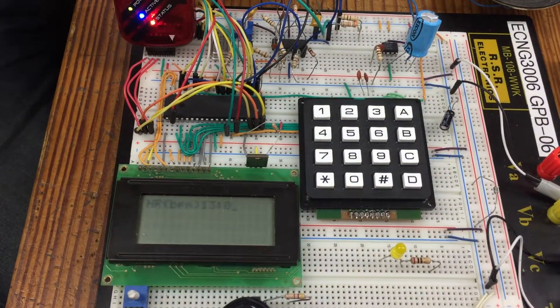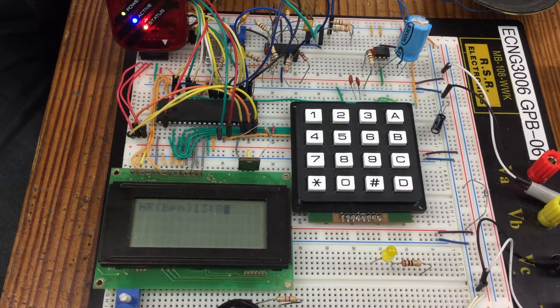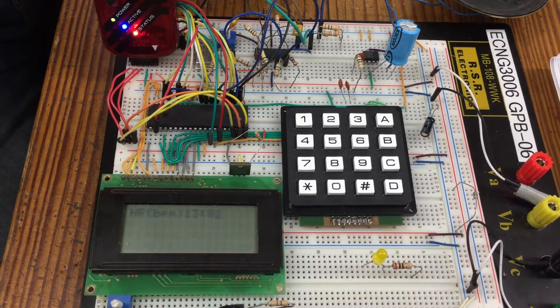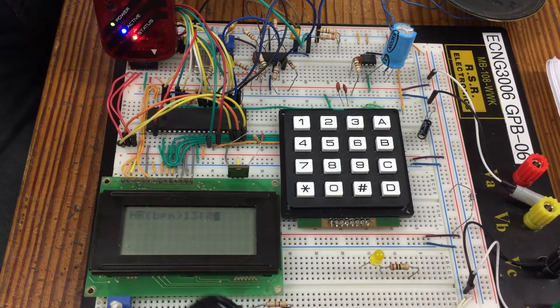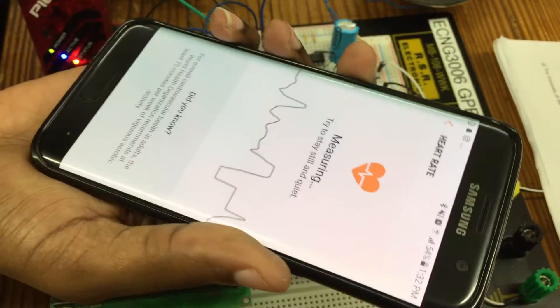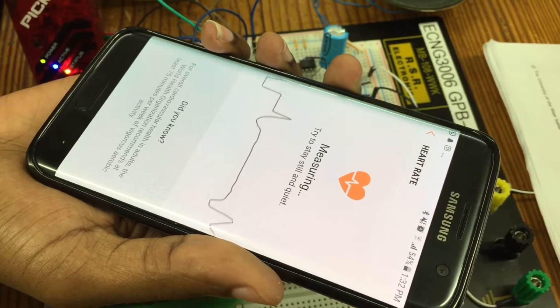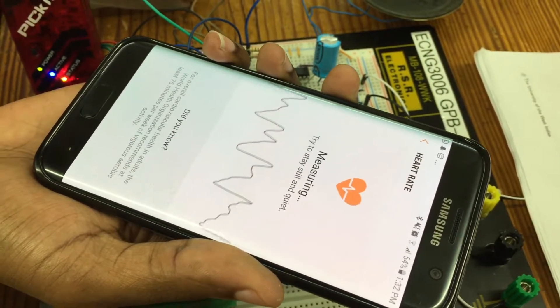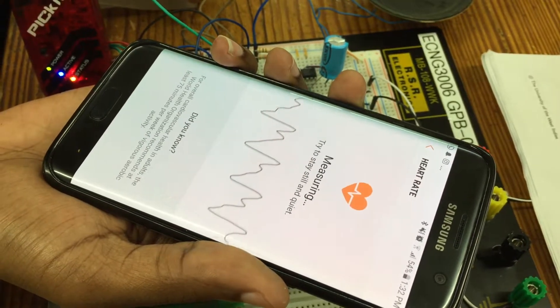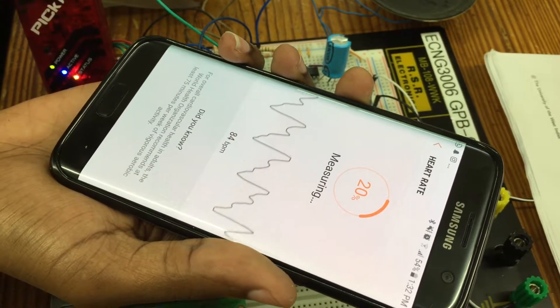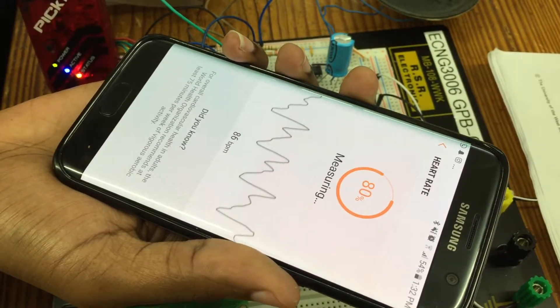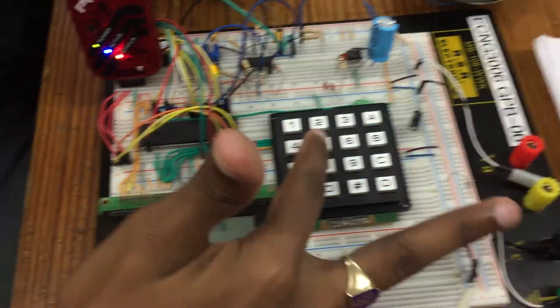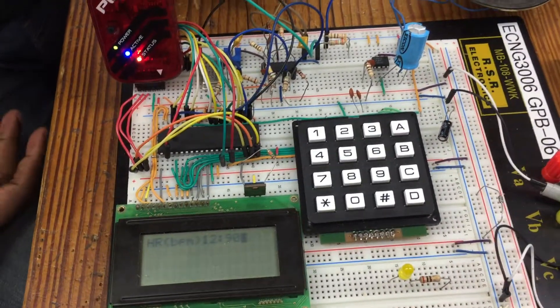So one is on my phone, the heart rate sensor on my phone. So you can see like 87 beats per minute. And we have approximately 90, so it is relatively accurate.